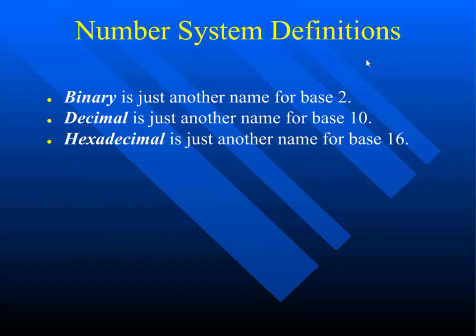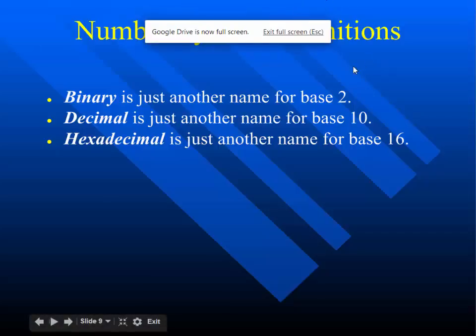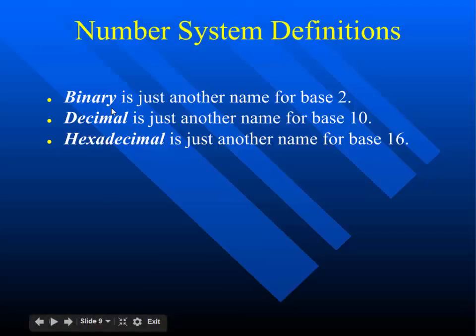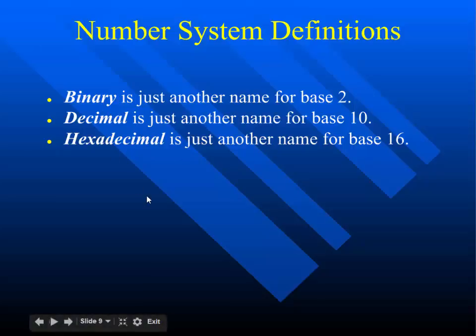The number systems we talk about in this class are binary, decimal, and hexadecimal. Binary is base 2, decimal is base 10, hexadecimal is base 16. When I work with computers, I usually just deal with decimal and hexadecimal. Binary just takes too many digits to write out even small numbers — we'll see that in a second.